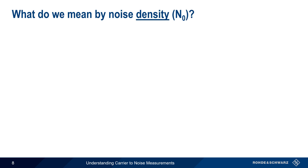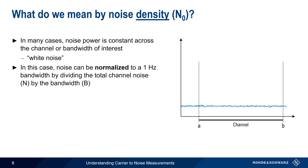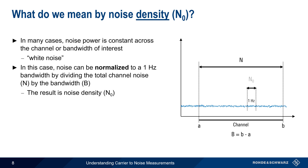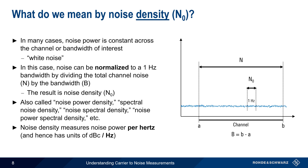Let's come back to the topic of noise density. In many, if not most cases, noise power is constant across the channel or bandwidth of interest. Noise that is uniformly distributed over frequency is often referred to as white noise. In this case, noise can be normalized to a 1 Hz bandwidth by dividing the total channel noise, N, by the channel bandwidth, B. The result is noise density, usually abbreviated N0. You may also hear this referred to as noise power density, spectral noise density, noise spectral density, or noise power spectral density. Regardless of which name is used, this quantity describes the noise present in a bandwidth of 1 Hz, and thus has units of dBc per Hz.